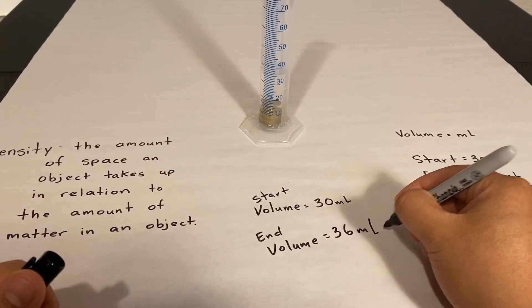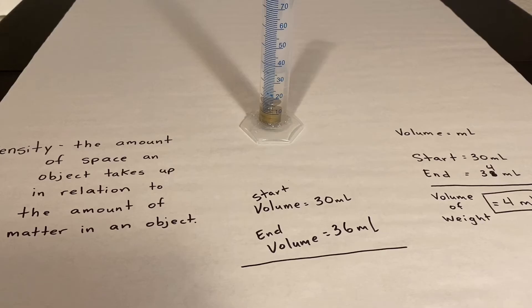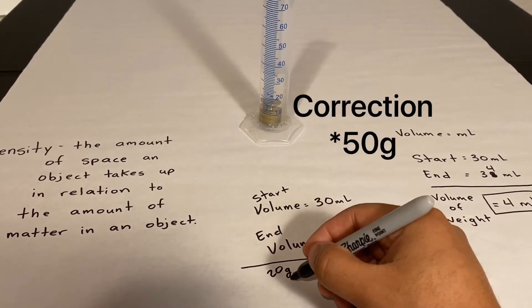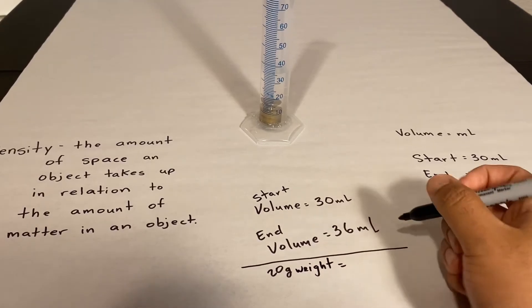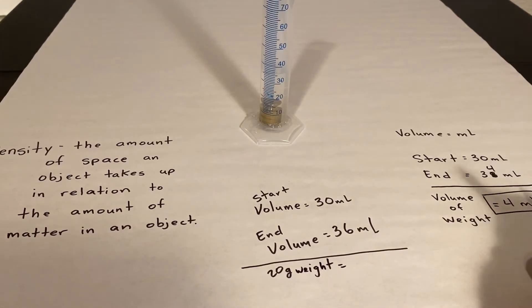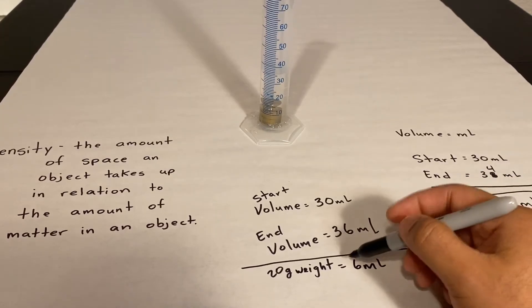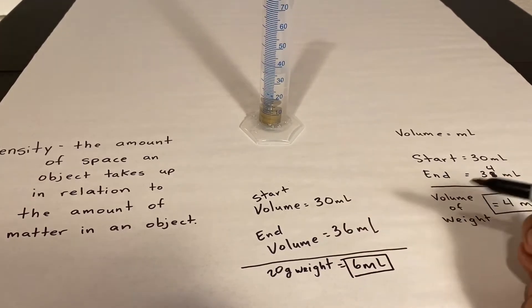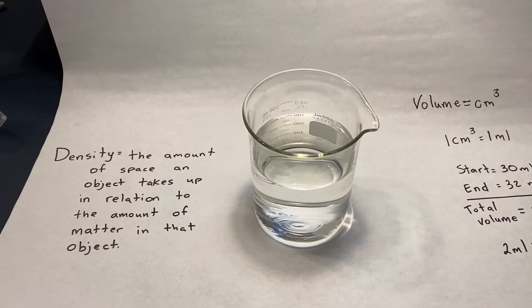All right, a bit over 35, 36, let's say 36. Okay, so 36 mL. And so the total volume of the weight, 50 gram weight, is going to be, what's 30 minus 36? Six, six milliliters, and that is going to be the volume of this weight.